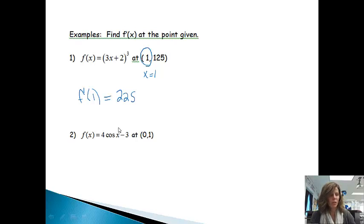So now let's go ahead and try the next one. We have f(x) equals 4 cosine x minus 3, and it's at the point (0, 1). So again, notice again, I do not care about the y value, I'm only concerned about that x value, so we're going to be finding it at x equals 0. So let's once again go to our calculators.